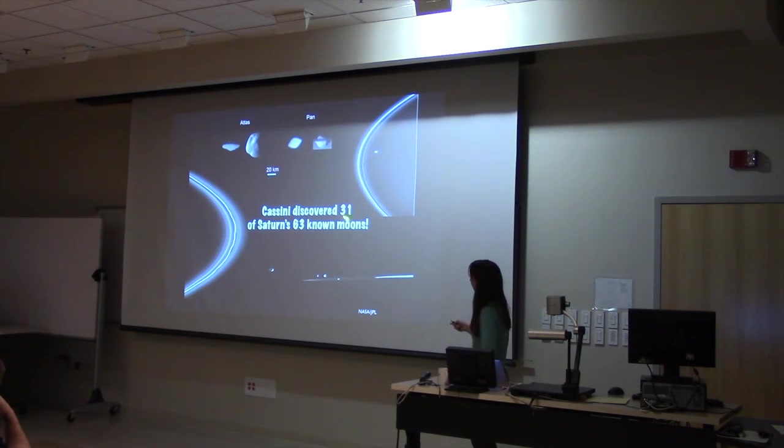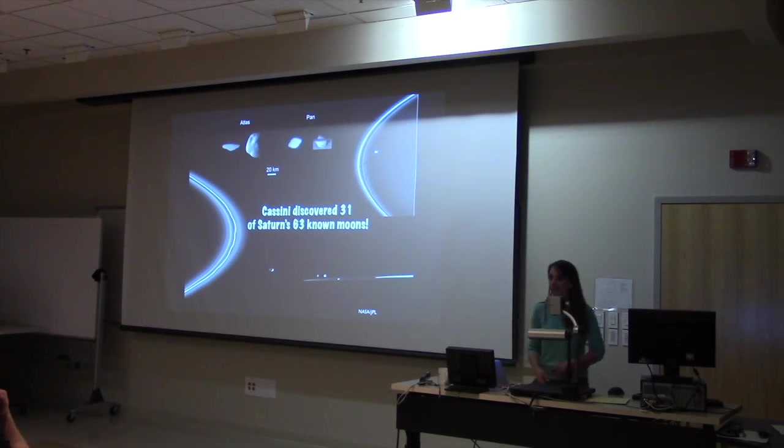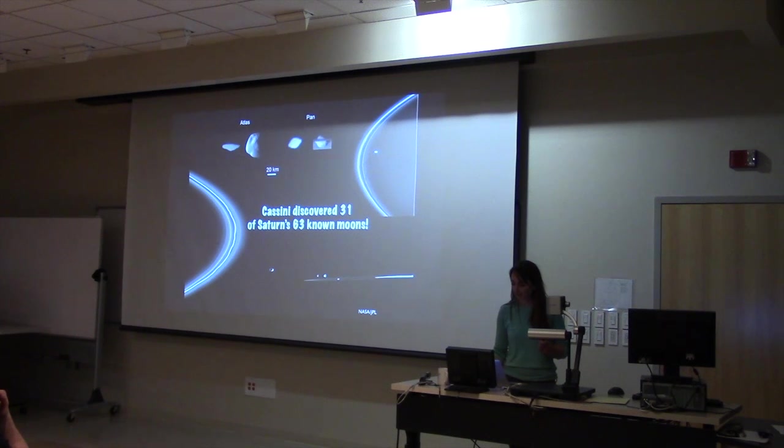A lot of these little moons are kind of part of the ring structure in that they're close to the ring and they perturb what the particles in the ring look like. So Cassini discovered 32 moons. Now we've got 63 moons, and only 53 of them have names. So we've got some ideas. I'll move to NASA.